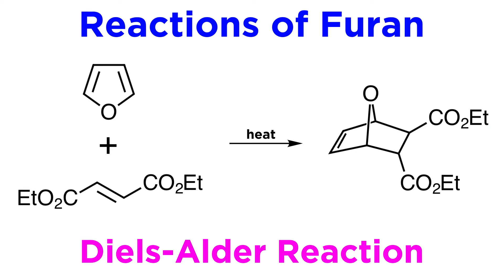Furan can also act as a diene in a Diels-Alder reaction, and because it is electron-rich, it can easily react with any activated dienophile, such as diethyl fumarate, even under moderate conditions involving slight heating, to generate the product we see here.